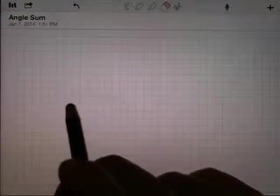All right, here's a quick way of seeing that the sum of the angles in a triangle always add up to 180 degrees.